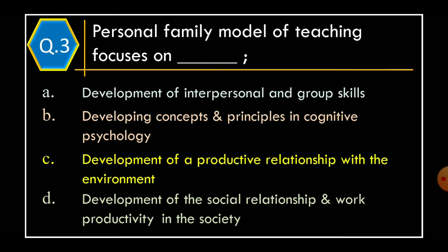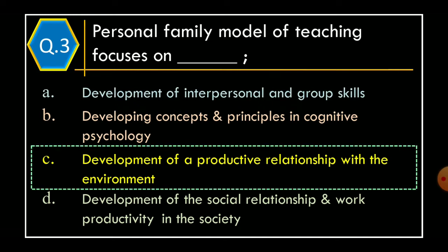Question 3. Personal family model of teaching focuses on: Option A – Development of interpersonal and group skills. Option B – Developing concepts and principles in cognitive psychology. Option C – Development of productive relationship with the environment. Option D – Development of social relationship and work productivity in the society. The correct option is Option C: Development of productive relationship with the environment.